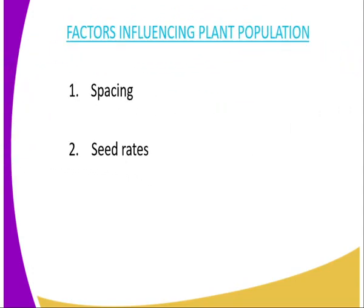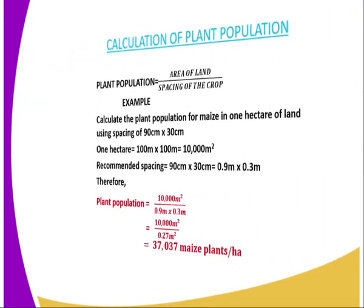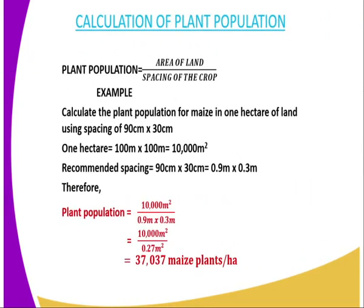The factors influencing plant population: the first one is spacing — the distance between one plant to the next and also between the rows in which the plants are grown. The second is seed rate, which I have already defined. For calculation of plant population, we normally use the formula: Plant Population equals the area of the land divided by the spacing of the crop.